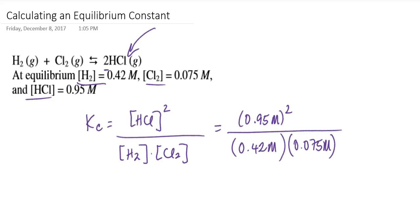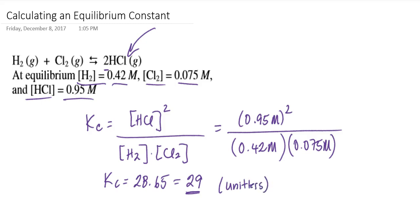Calculating that out: 0.95 squared divided by 0.42 times 0.075 gives a Kc value of 28.65. Since my concentrations are each provided to two significant figures, I would report the equilibrium constant to two significant figures as well, giving a Kc of 29. Note that equilibrium constants are unitless. The reason is that the equilibrium constant is based on something called activity, which is closely related to concentration, and because of the way activity works, the concentration units cancel. Equilibrium constants are therefore expressed without units.